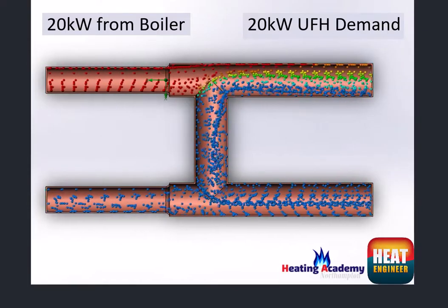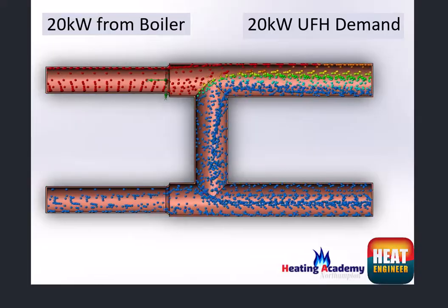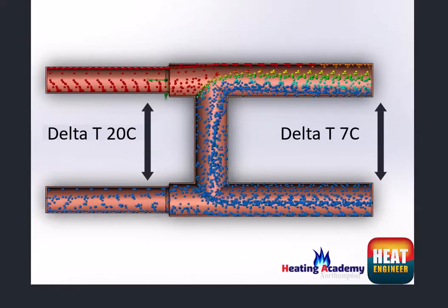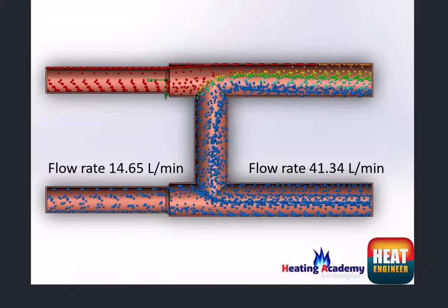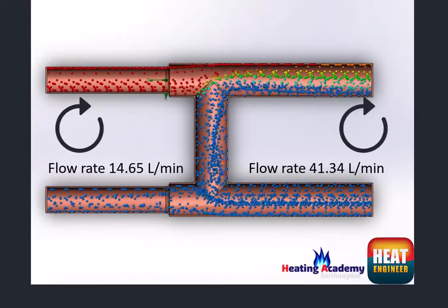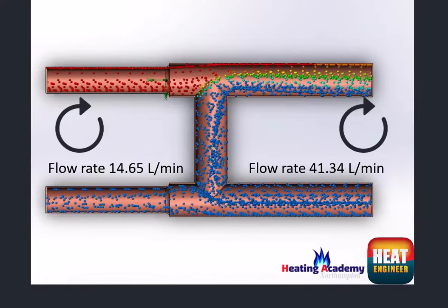So we've got 20 kilowatts coming from the boiler and we need a demand equal to that for the underfloor heating system, but the delta T requirement is different, which would mean the flow rates are different for each particular circuit, but we do have hydraulic separation here.